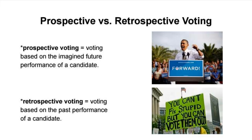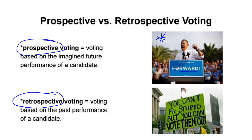How do people decide how to vote? Prospective voting is based on the promise of the future. When President Obama ran with a message of hope and change, that was prospective voting — he attracted voters encouraged by his messaging. Retrospective voting is more of a judgment of past performance: have you done a good job or not? The joke of someone holding a sign saying 'you can't fix stupid, but you can vote him out' is a perfect example of retrospective voting.